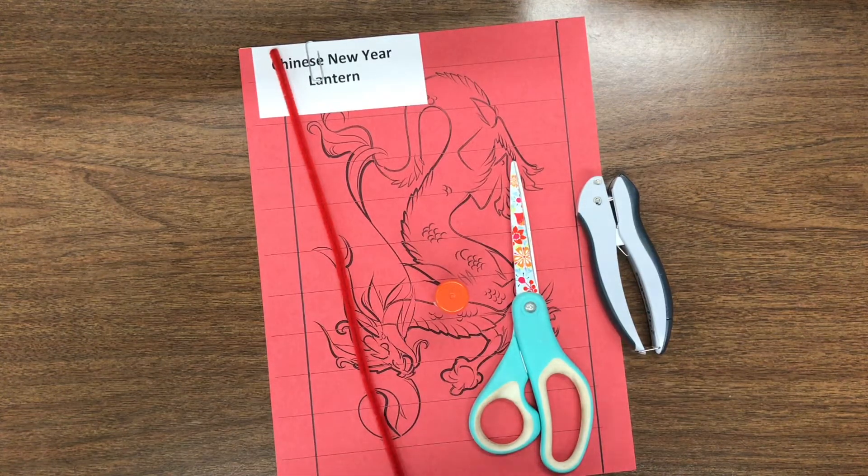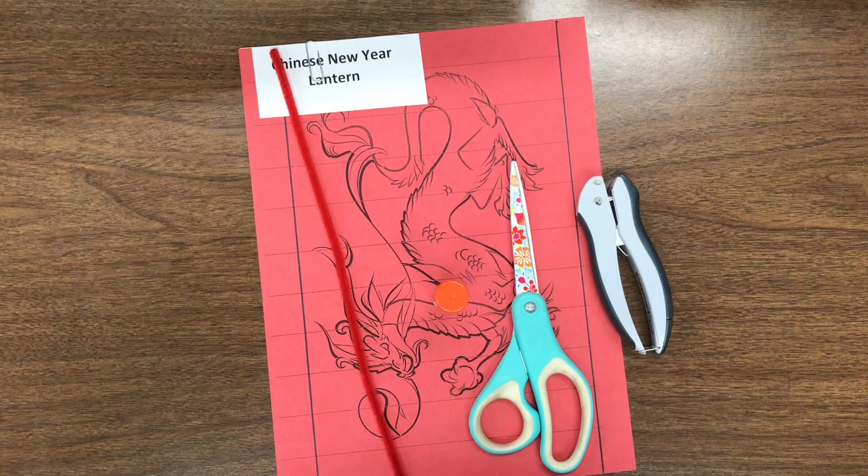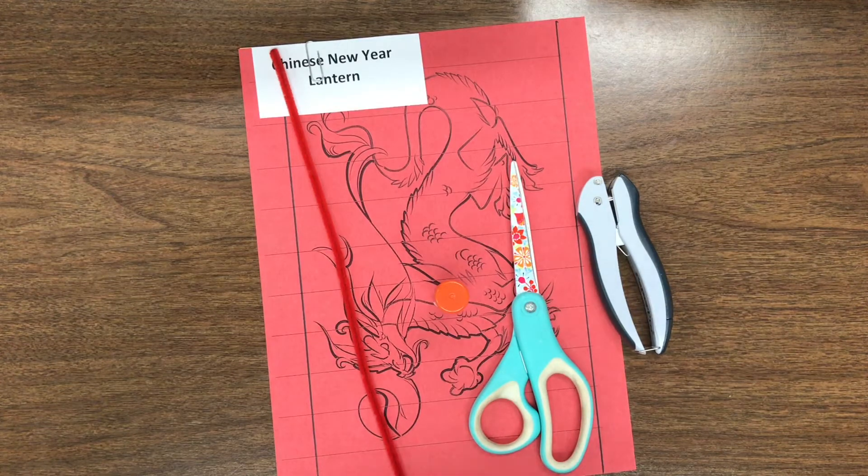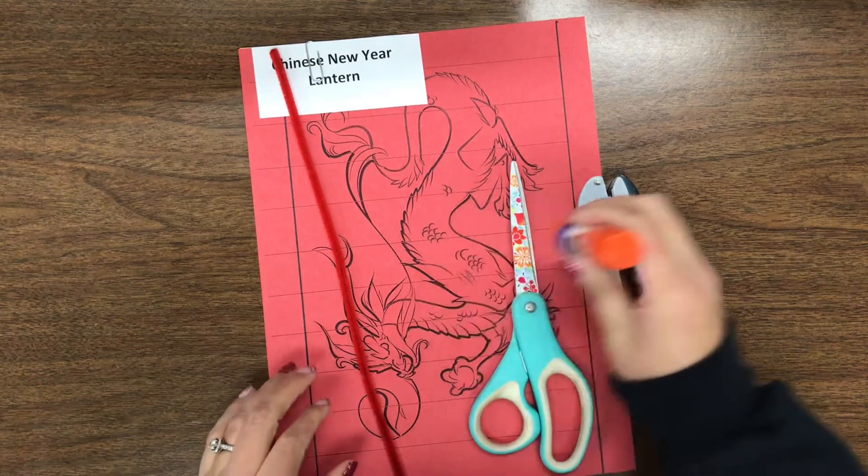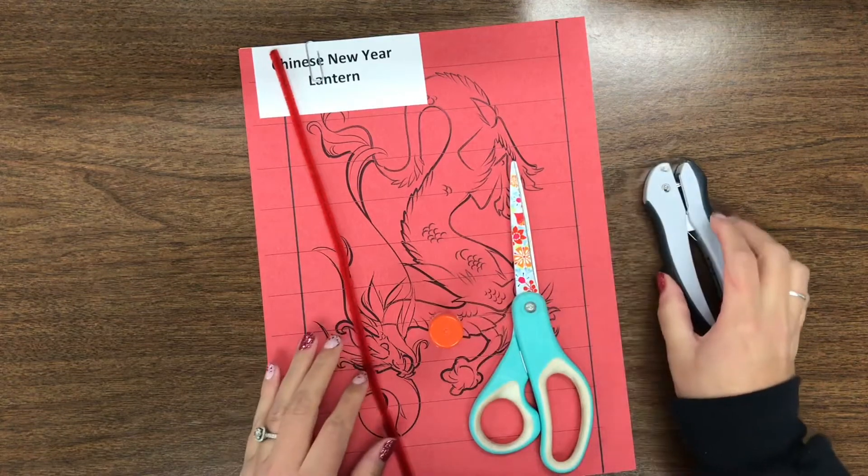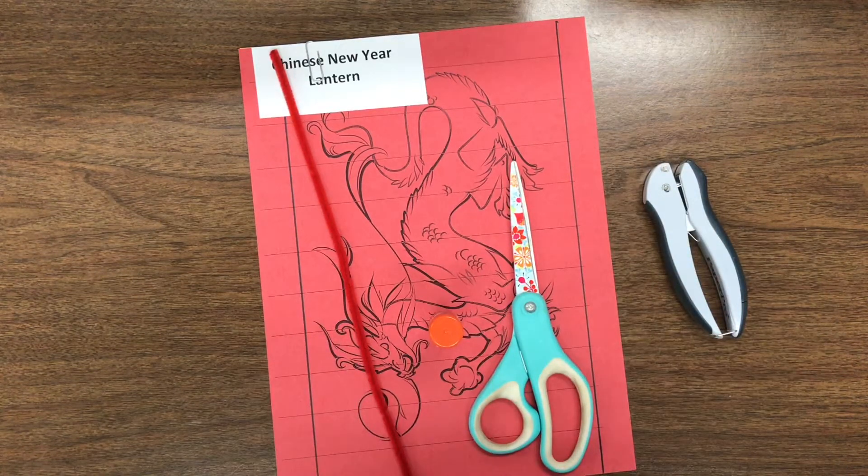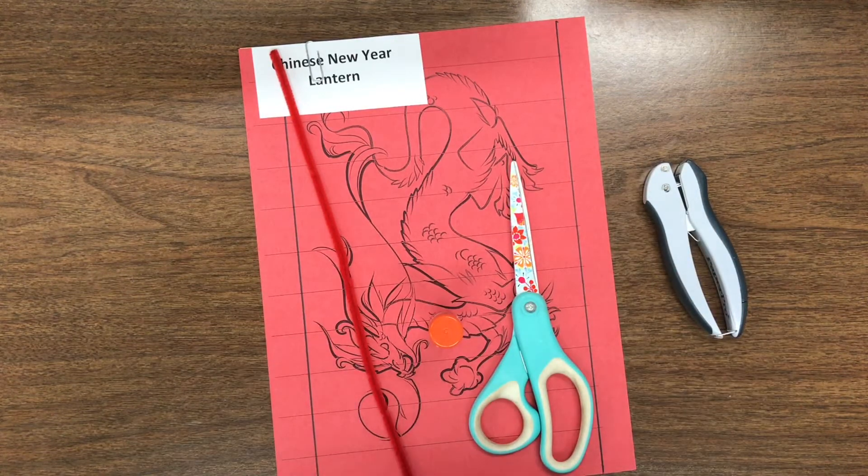Hello kindergartners, this is Mrs. Hilliard and we are gonna do our next art project. Today we're gonna be making a Chinese New Year lantern because we've been talking about Chinese New Year and the lanterns are one of the things that they use to decorate for the Lunar New Year. So I'm gonna show you how to make one.